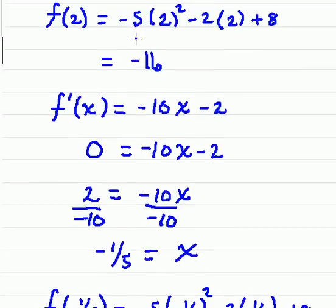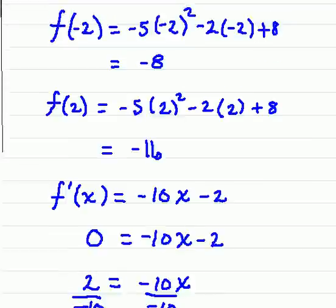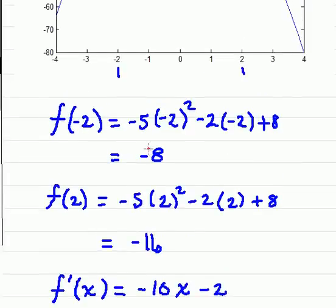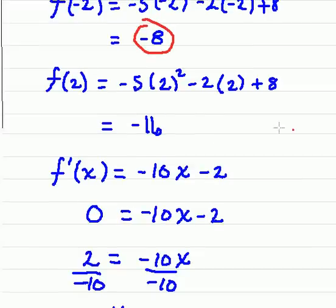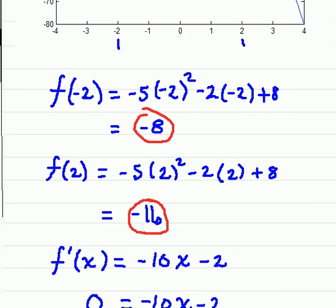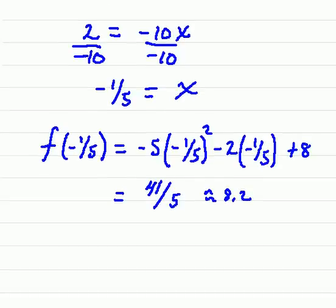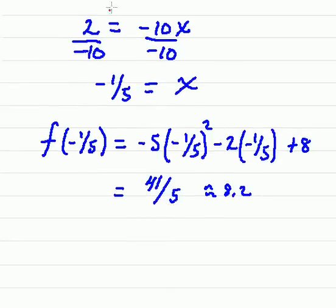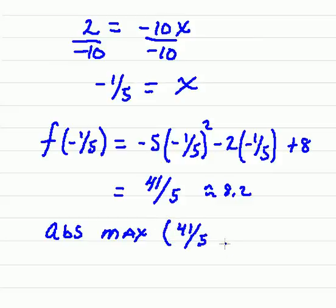And now what we're going to do is we're going to compare. Here we have negative 8, negative 16, and 8.2. And so as we can see that the smallest is negative 16, and the largest is 41 over 5. And so I'll write this down here, that our absolute maximum is occurring at 41 fifths.